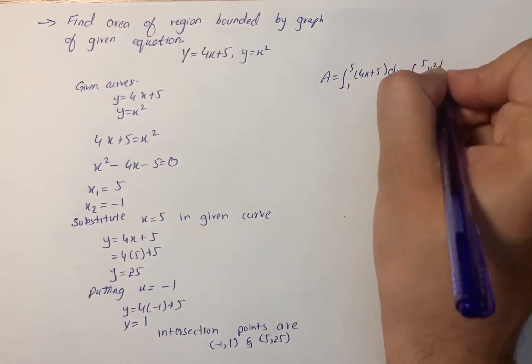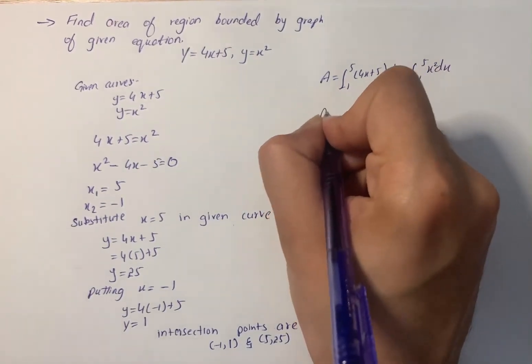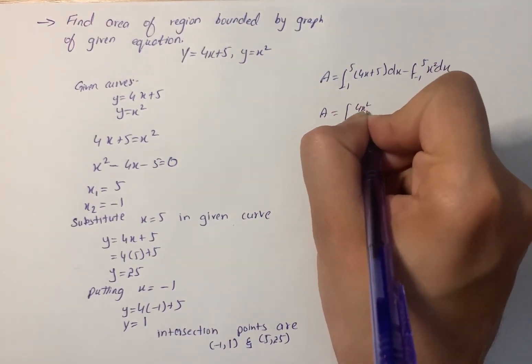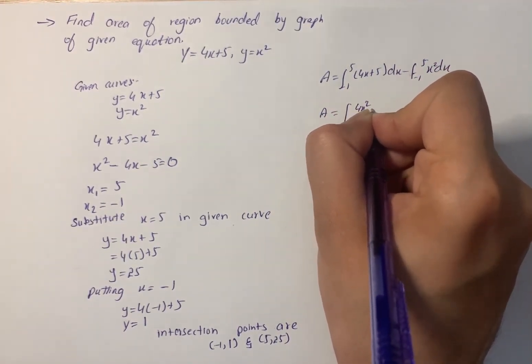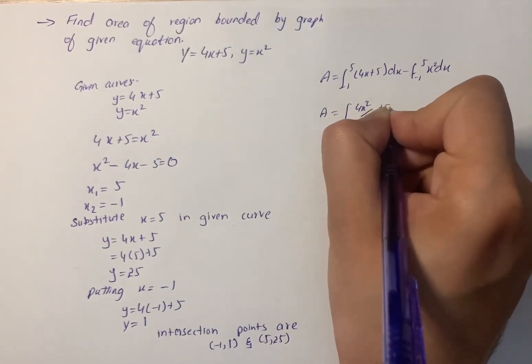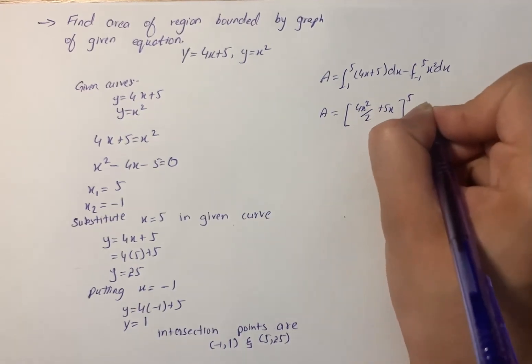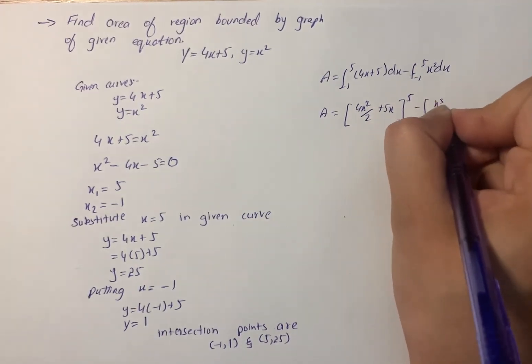Now we have A equals [4x squared over 2 plus 5x] from -1 to 5 minus [x cubed over 3] from -1 to 5.